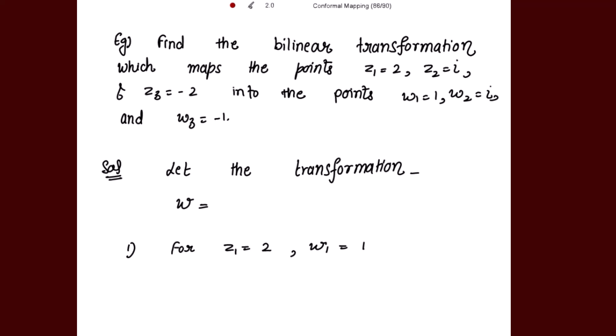The points z1, z2, z3 and w1, w2, w3 are given. We take the transformation w = (az+b)/(cz+d). We will put these point pairs one by one — first z1 and w1, then z2 and w2, then z3 and w3 — to get three equations. Solving those three equations gives us the values of a, b, c, d, which we then substitute back into the transformation to get the required result.